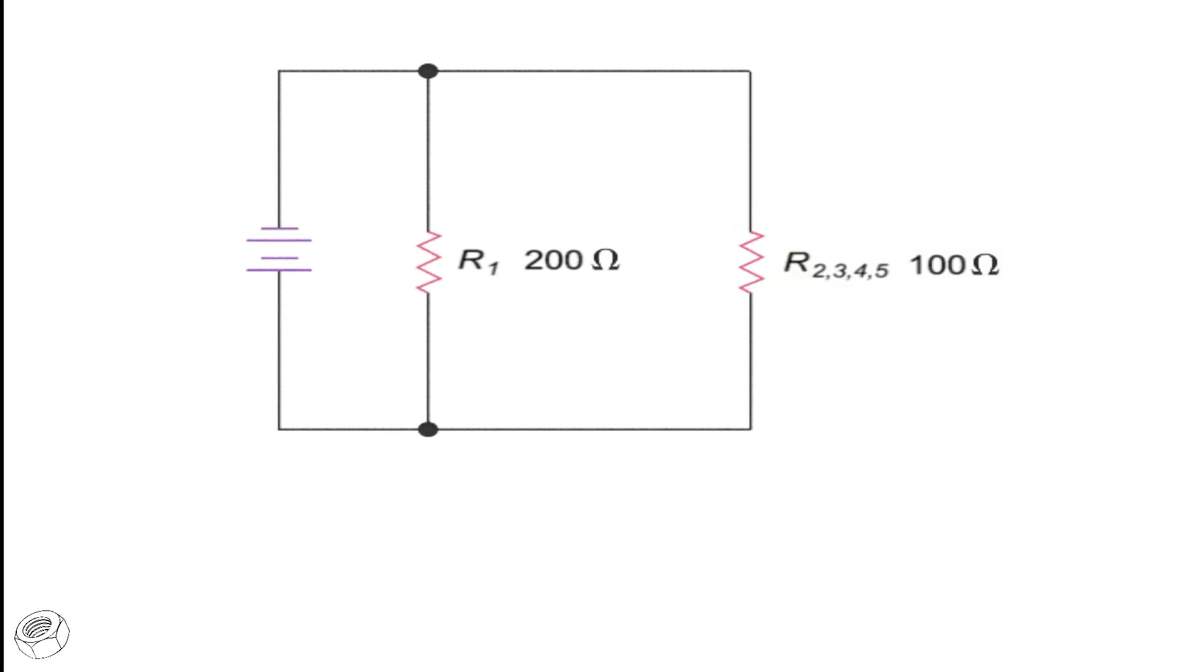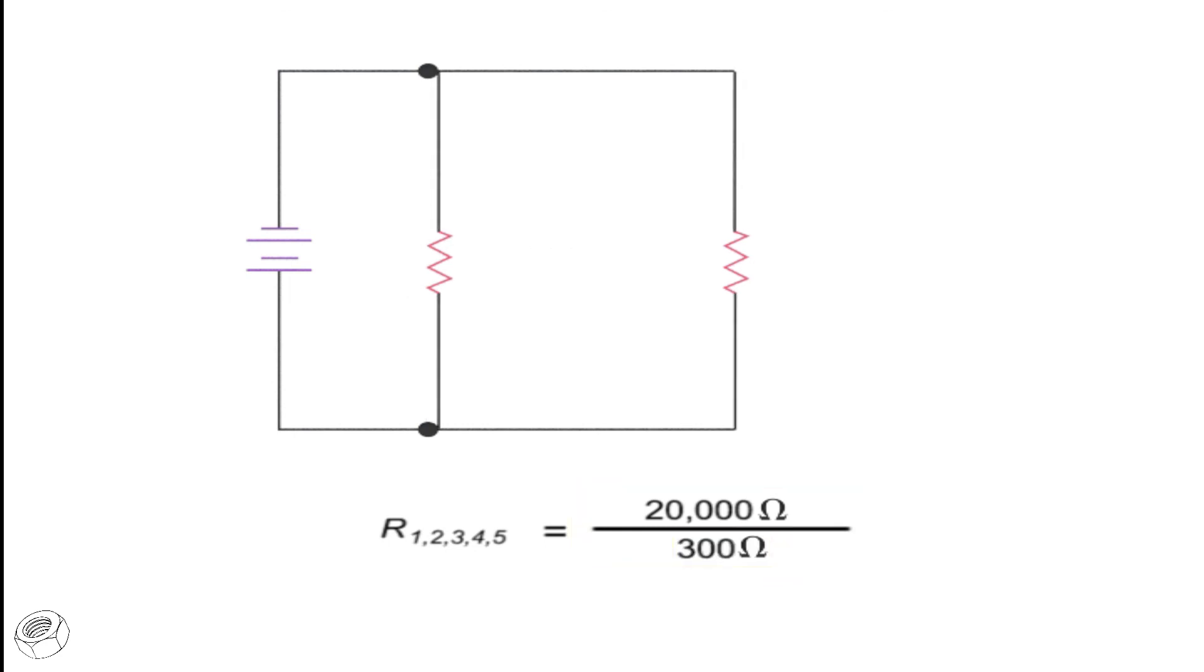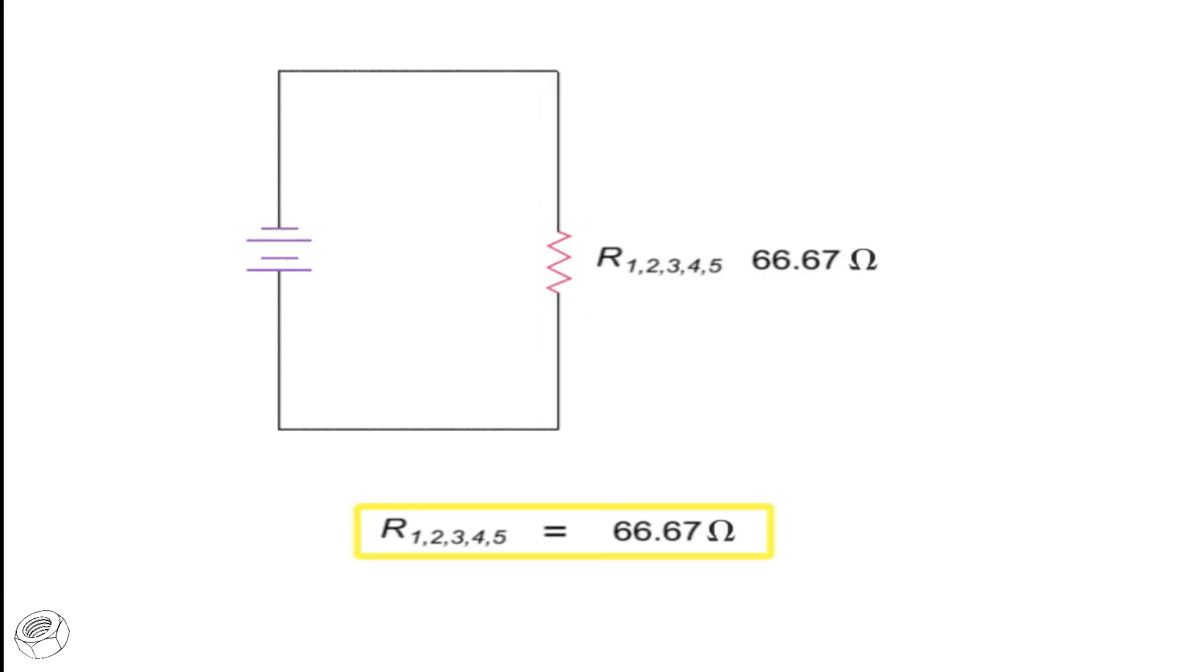And finally, we are left with two resistance values in parallel, the R1 resistance of 200 ohms, and the equivalent value of 100 ohms for resistors 2, 3, 4, and 5. Again, using the product over sum equation, we can determine the combined resistance. Multiplying 200 times 100 gives 20,000 divided by 200 plus 100, which is 300, resulting in an overall circuit resistance value of 66.67 ohms.